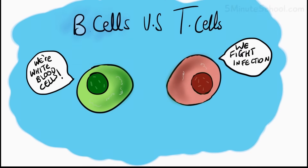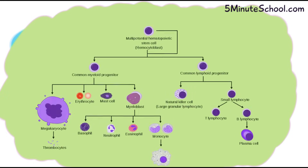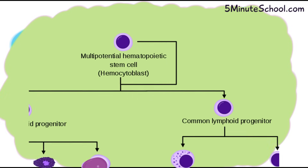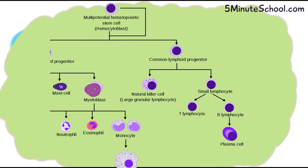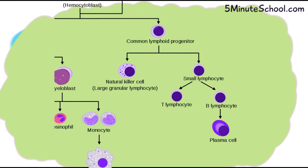In today's video we're going to be talking about B cells and T cells. They're both white blood cells and they have a role in immune function, meaning they have a protective role in fighting infections. There are different types of B cells and T cells but they all originate from the same cell, known as the hematopoietic stem cell, which originates in the bone marrow.